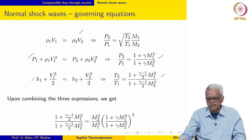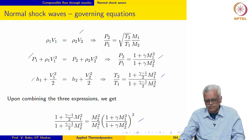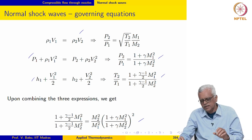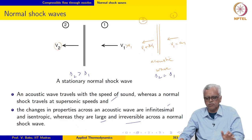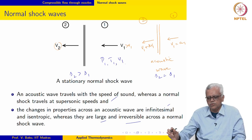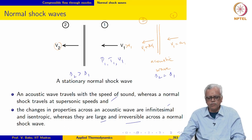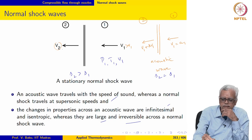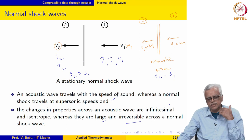Using the definition of Mach number and the calorically perfect assumption, we can come up with expressions and combining all three equations we end up with a combined expression. M1 is known because that is the speed of the fluid approaching the shock wave. Given P1, T1, and V1 — which completely describe the state of the fluid before the shock wave — the question is how do we determine V2, P2, and T2? So M1 is known and M2 is unknown.